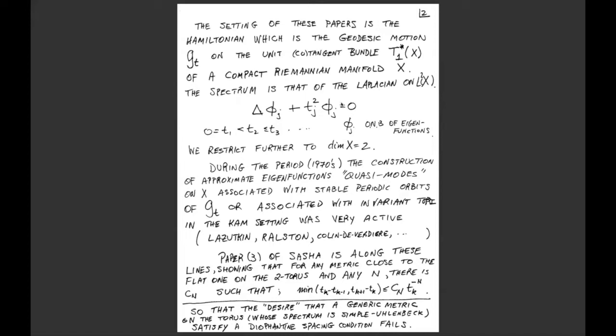The setting is the geodesic motion on the cotangent bundle of a compact Riemannian manifold. T_j squared are the eigenvalues, and the T's denote the square roots of the eigenvalues or frequencies. These are positive numbers going to infinity at a rate dictated by Weyl's law. Sascha stuck to negative curvature, but what he was doing only required ergodicity.